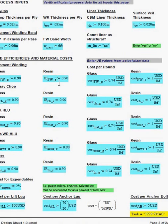Process inputs start on page 8. There are thicknesses per layer for mat, woven roving, the liner, the surface veil thickness, and so on.